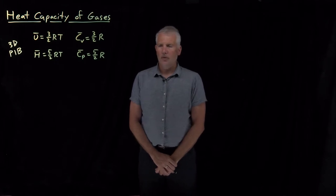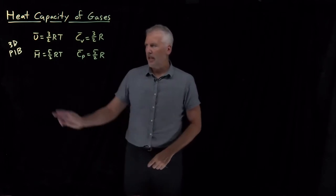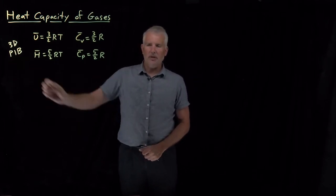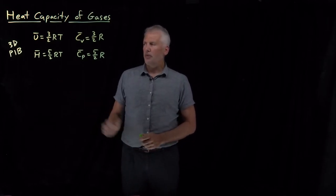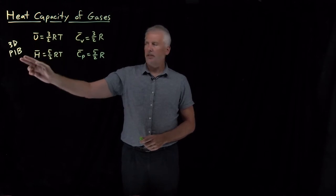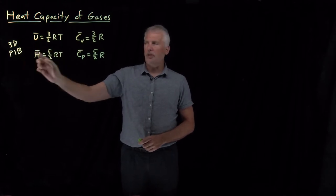So the heat capacities for ideal gases, at least the ideal gases that we've been able to understand using the 3D particle-in-a-box model, have turned out to be fairly simple. The internal energy of an ideal gas, as predicted by the 3D particle-in-a-box model, is 3/2 RT.